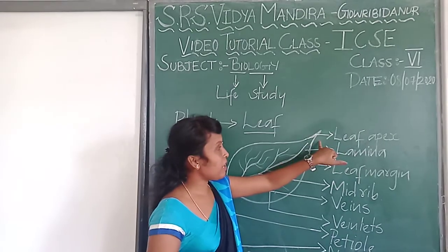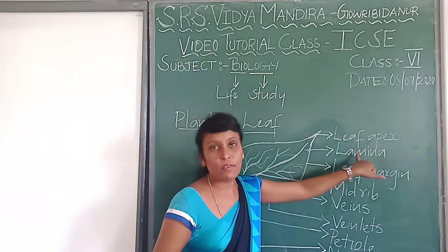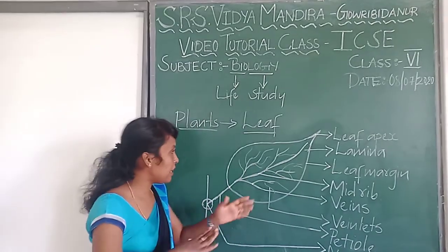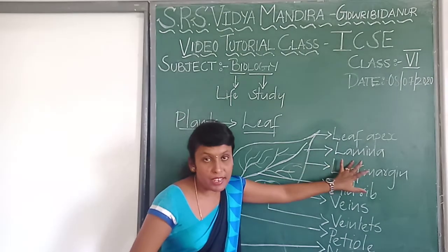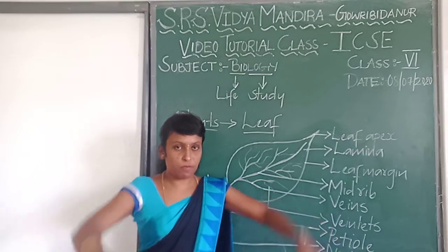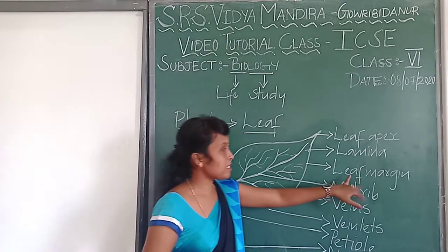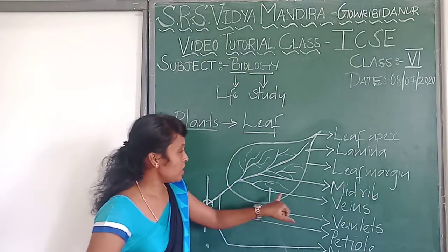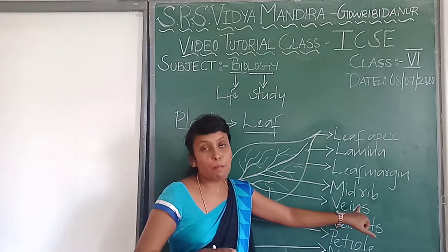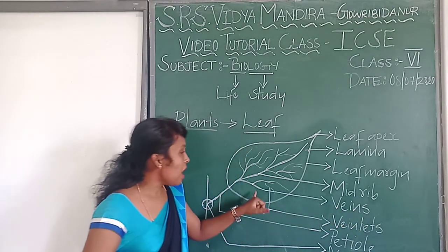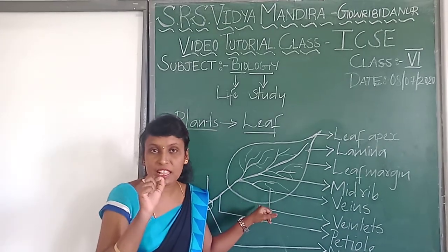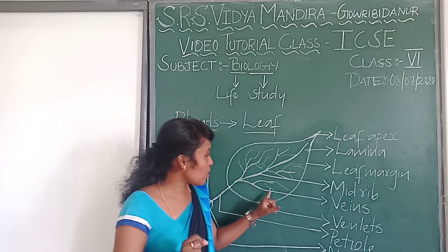The tip of the leaf is called the leaf apex. The flattened portion of the leaf is called the lamina. The margins of the leaf are called the leaf margin. The thick line in the middle of the leaf is called the midrib. You can also see some hairline or thin branch-like structures on the leaf, which are called veins.